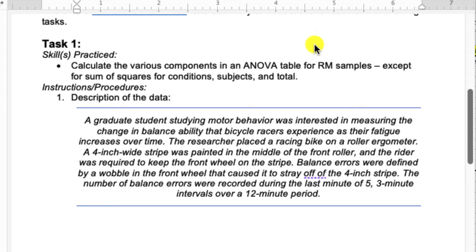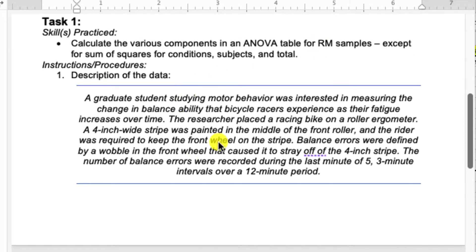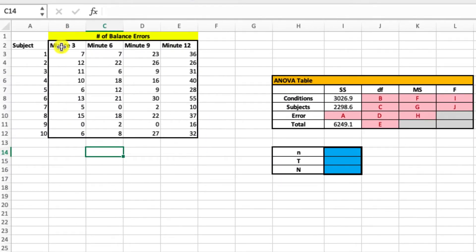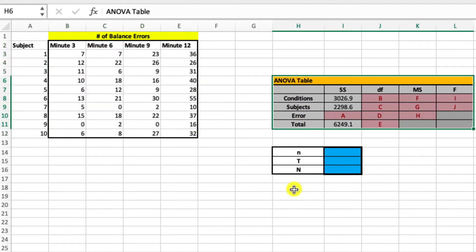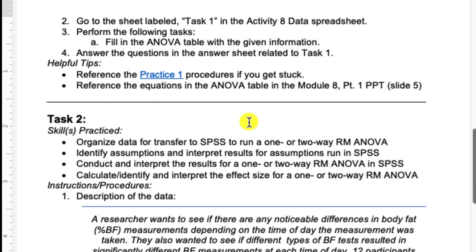For Task 1, this will be very similar to Practice 1. So I've given you a research scenario, and then in your data spreadsheet, you've got the data that were collected for that research scenario, and then an ANOVA table that looks pretty similar to what you used in Practice 1. So if you get stuck with any of those calculations, I recommend either re-watching the Practice 1 video, or you can also go to the Module 8 PowerPoint, specifically the Part 1 PowerPoint, and reference any of the equations that are applicable to the table.